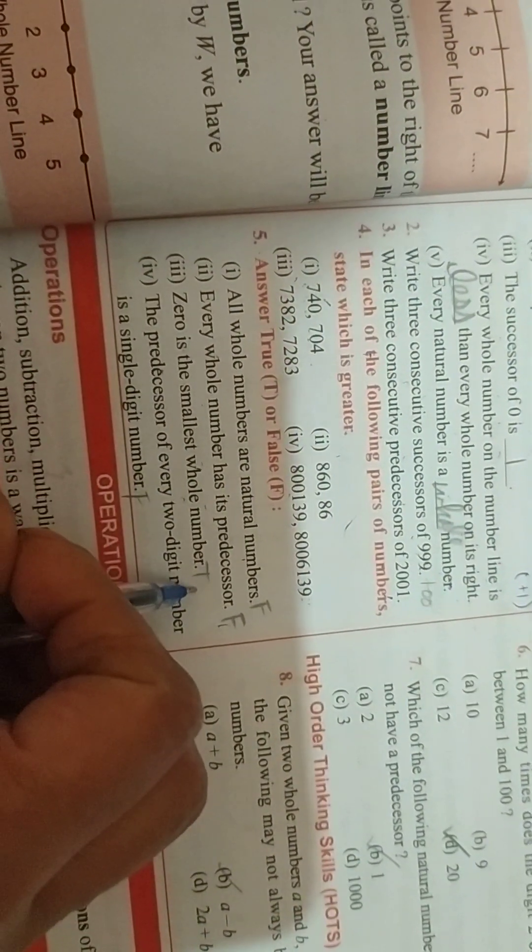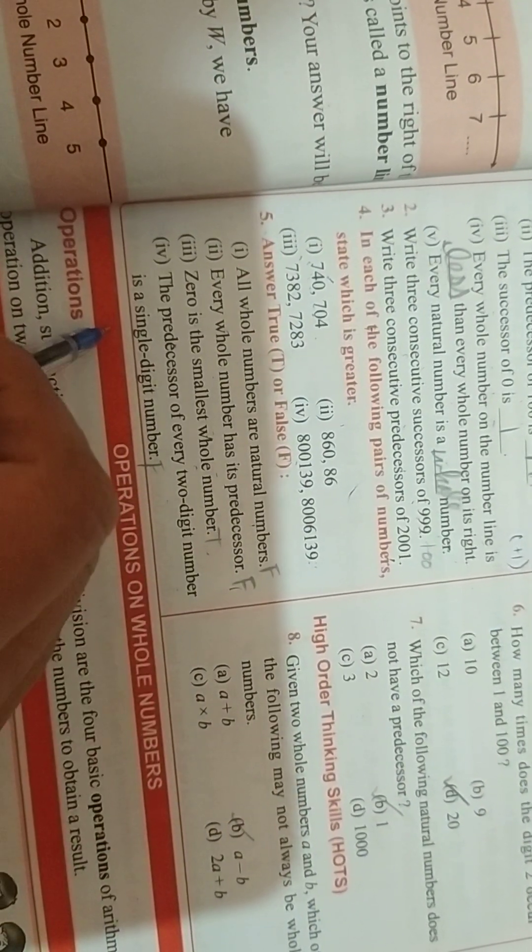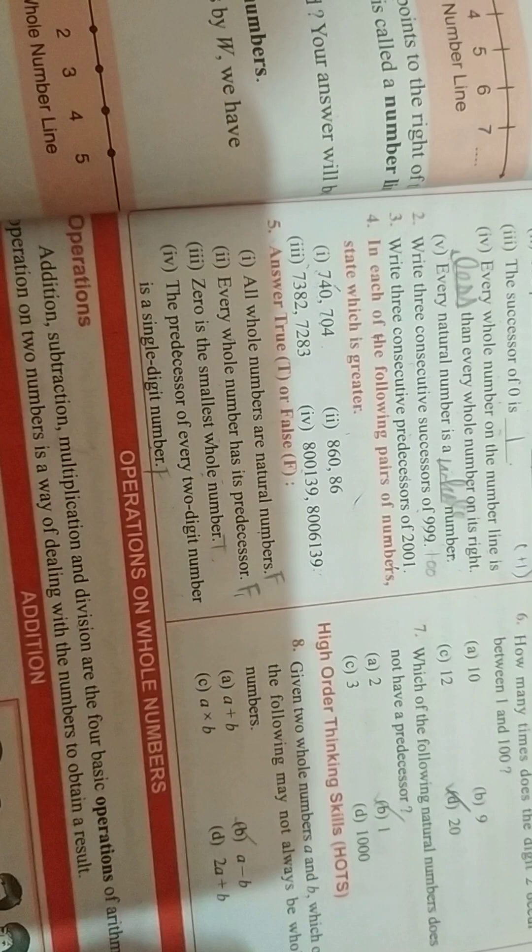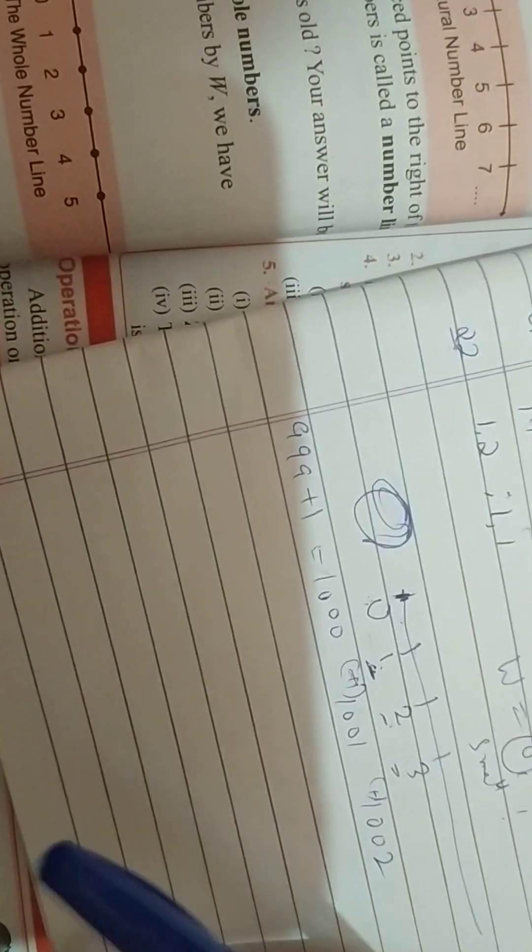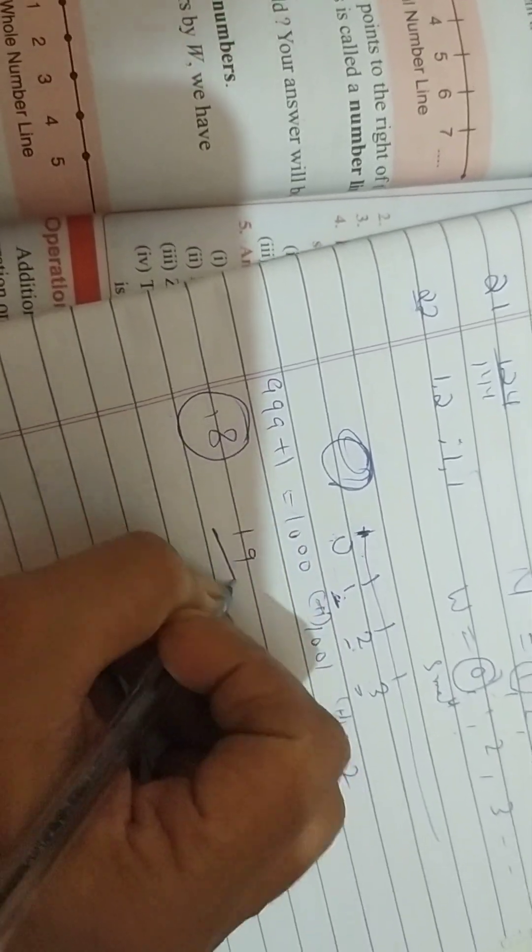So, every whole has not its predecessor. Every whole has its successor. 0 is the smallest whole? Yes. The predecessor of every 2 digit number is a single digit number. False. We can't say this. Suppose 19. Its predecessor is 18. So, it is 2 digit. It is 2 digit. So, we can't say this.